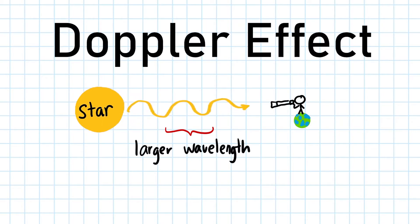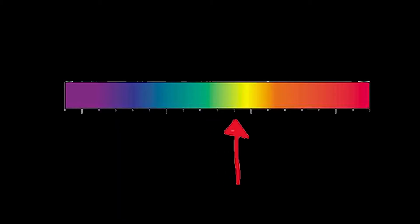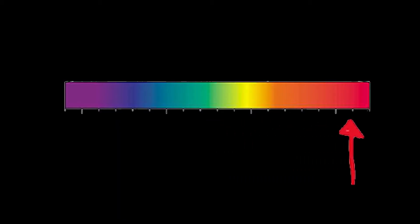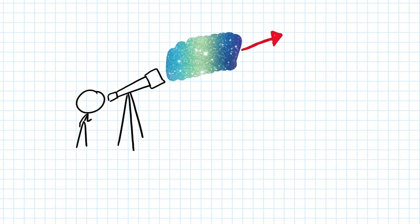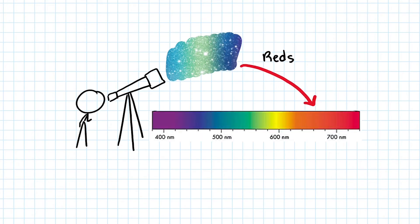This phenomenon is known as the Doppler effect, which causes the shift in wavelength towards the red end of the EM spectrum if the star is travelling away from us. We call this the red shift.